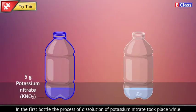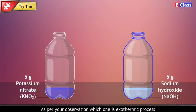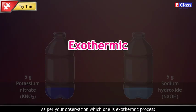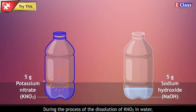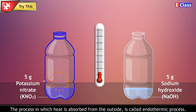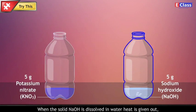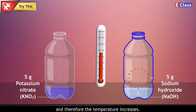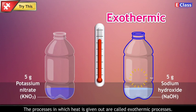In the first bottle, the process of dissolution of potassium nitrate took place, while in the second bottle, the process of dissolution of sodium hydroxide took place. As per your observation, which one is the exothermic process and which is the endothermic process? During dissolution of KNO3 in water, heat from the surroundings is absorbed and therefore the temperature of the resulting solution is less — this is an endothermic process. When solid NaOH is dissolved in water, heat is given out and the temperature increases — these are called exothermic processes.